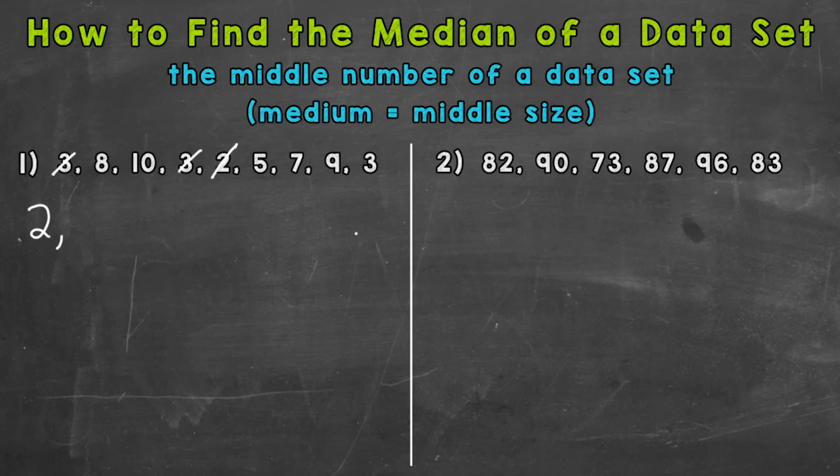Then we have three threes: one, two, three. We don't have a four, so we skip to a five here. I don't have any sixes, so then seven, eight, nine, and ten.